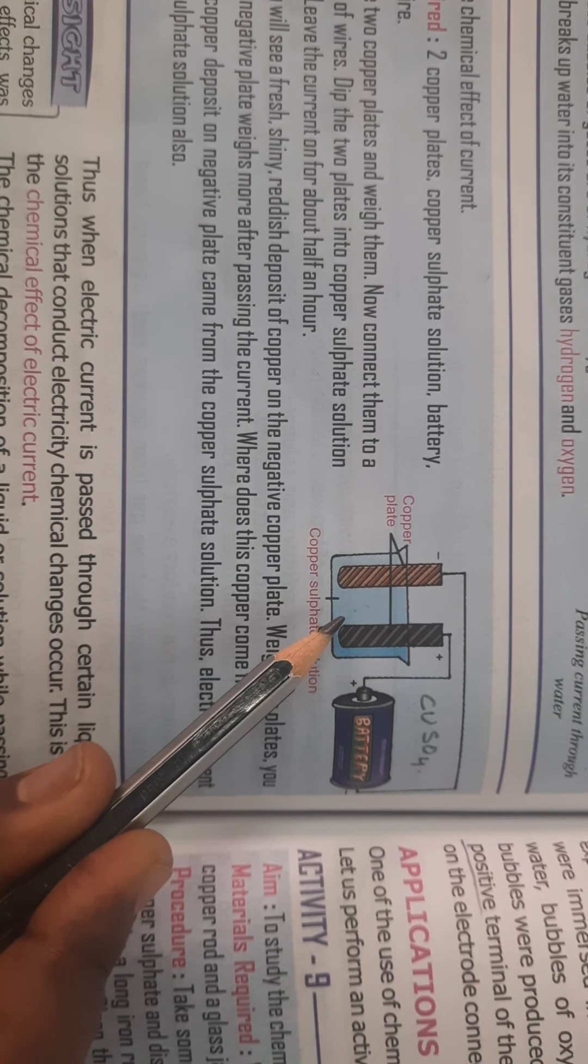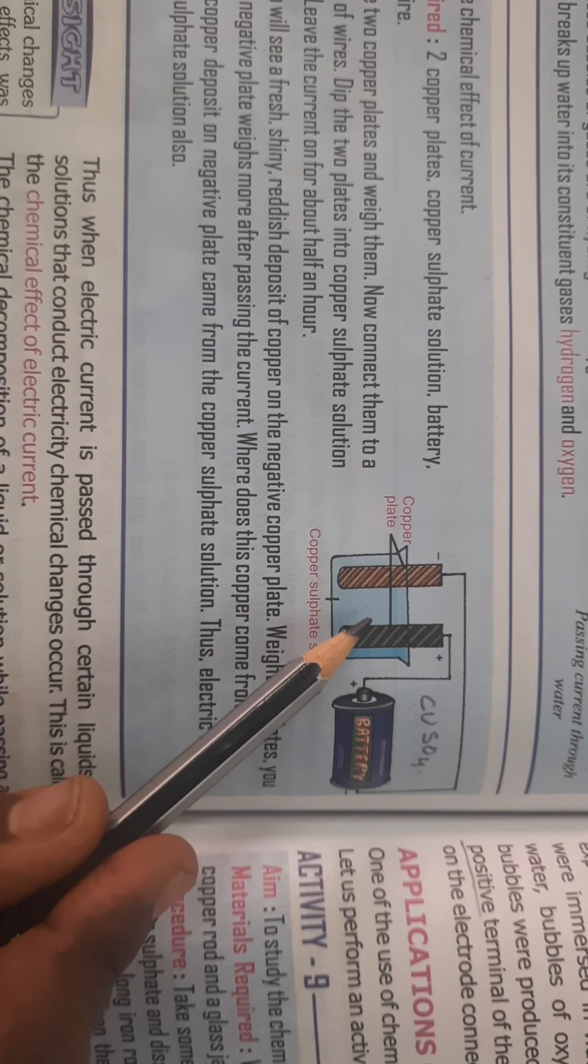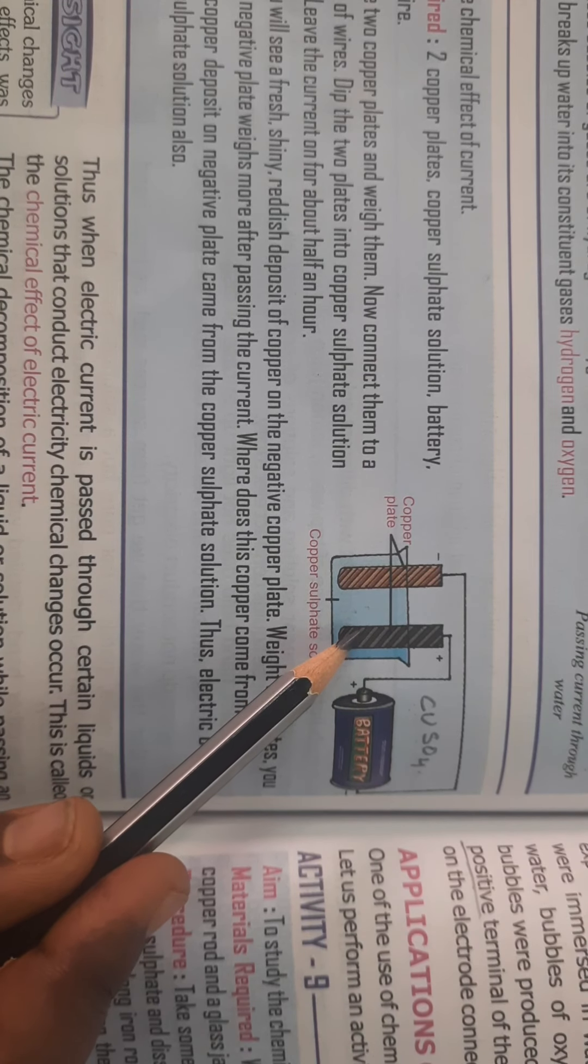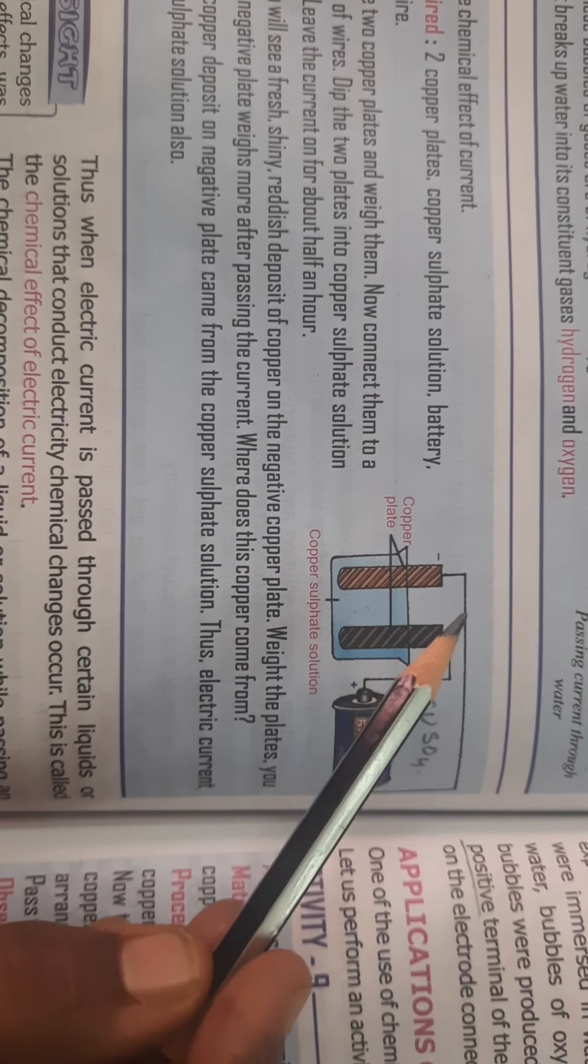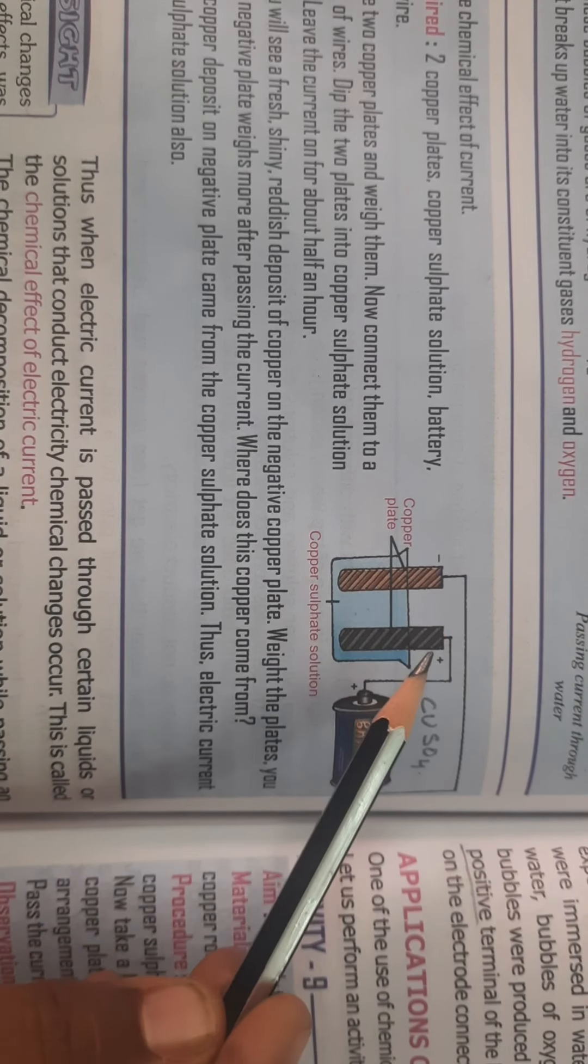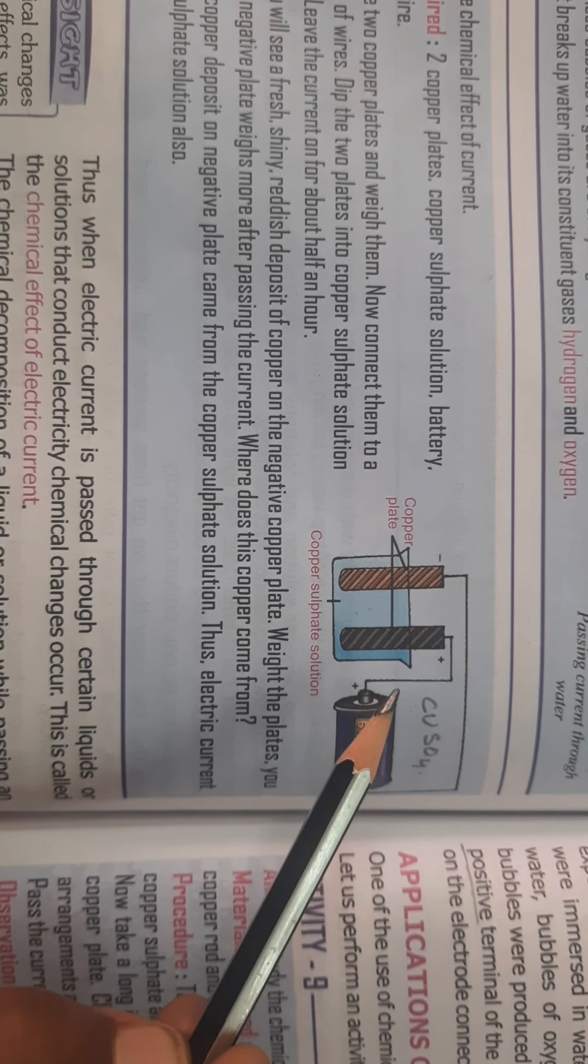Electrolysis is the process of breaking up or decomposition of the liquid on passing electric current. And what are electrodes? Electrodes are the two rods or carbon rods which are used to carry the electricity.